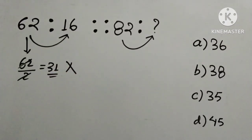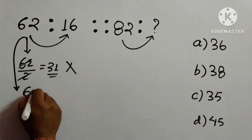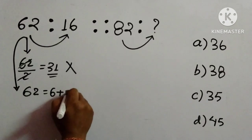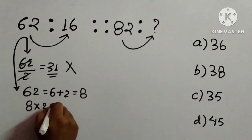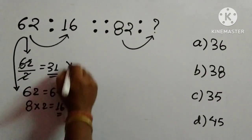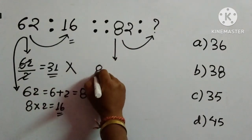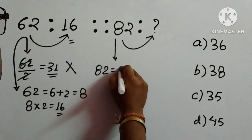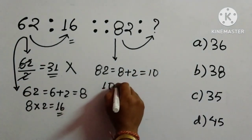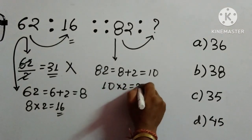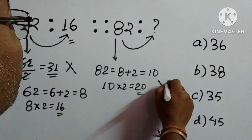We consider 62 and add the digits: 6 plus 2 is 8. Then we multiply by 2: 8 into 2 is 16, which is given. We check the same process on 82: 8 plus 2 is 10, and 10 multiplied by 2 is 20. But 20 is not given in the options, so we cannot follow this method either.